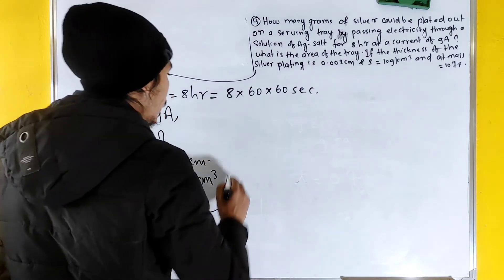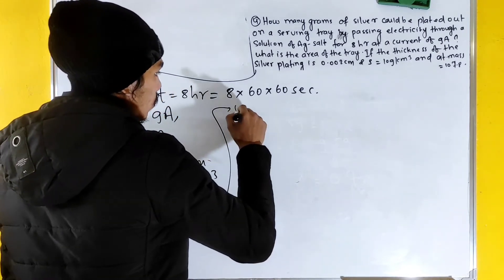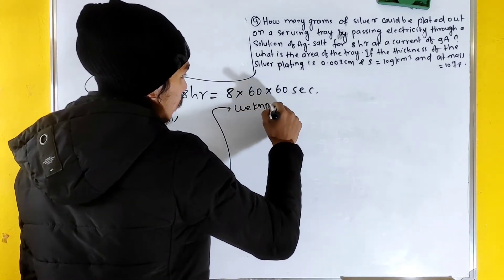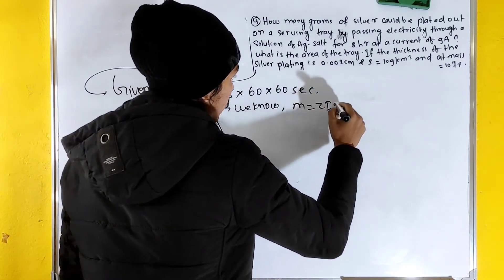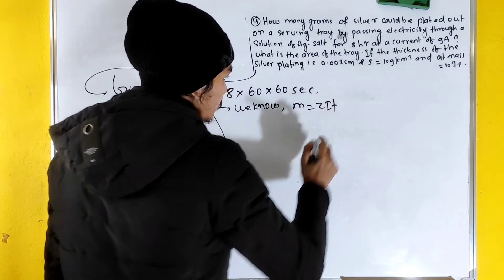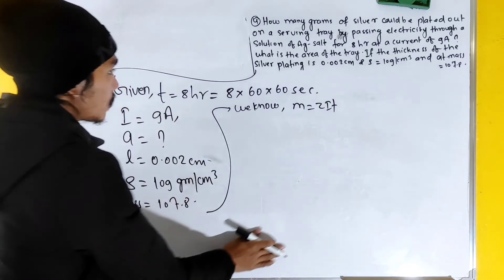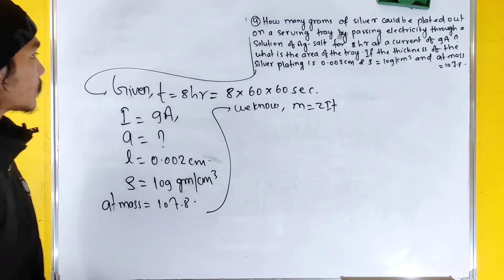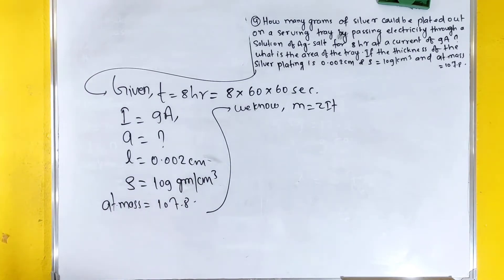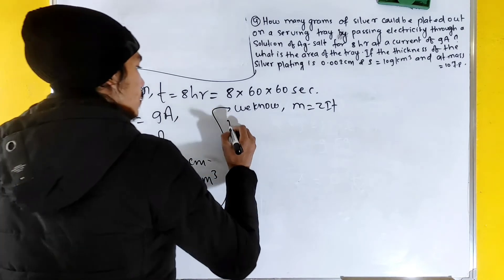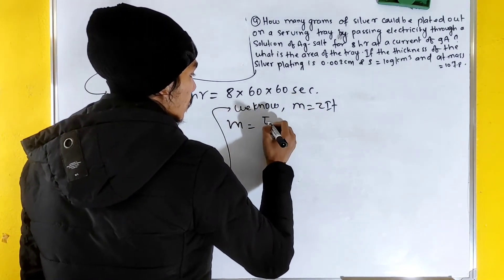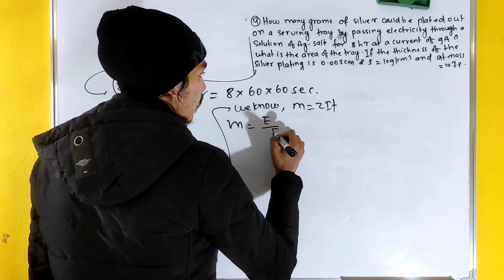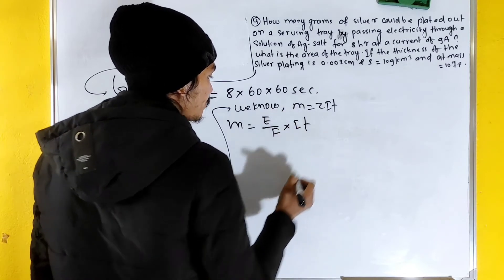Using m = z·i·t: mass is calculated using equivalent weight E by F into i into t. For silver, equivalent weight is 107, Faraday is 96500.